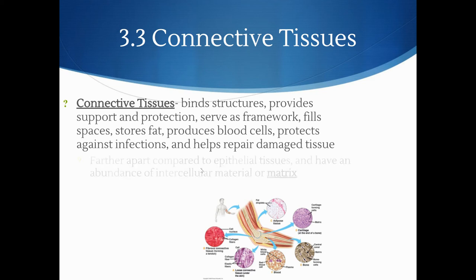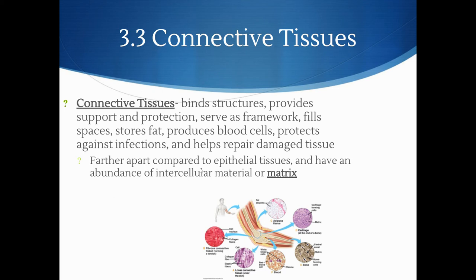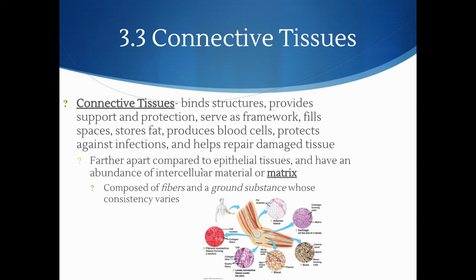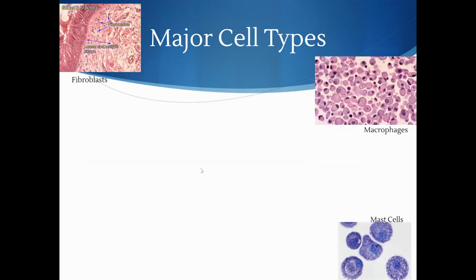Connective tissues are found farther apart from each other than epithelial tissues — epithelial tissues are always tightly packed. There's space between connective tissue cells, and that space is called the matrix — an abundance of intercellular material. The matrix is composed of fibers and a ground substance whose consistency varies: some will be more of a solid material, some more of a liquid, depending on the type of connective tissue.